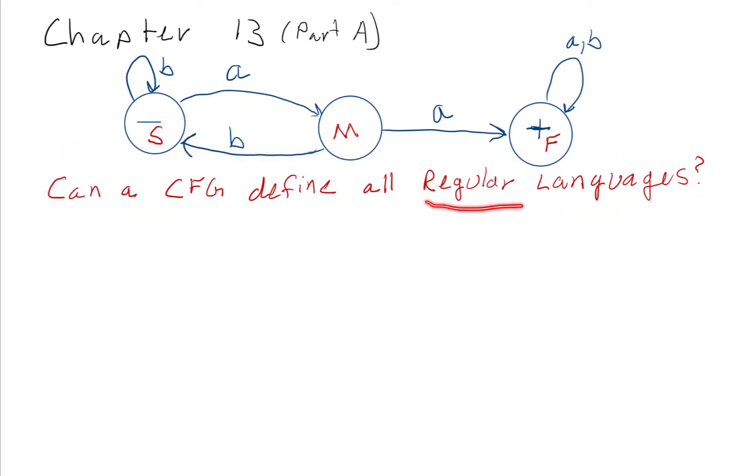Remember, a regular language is any language that can be defined with a finite automata, a transition graph, or a regular expression. With Kleene's theorem, if we could define it using one of those three things, we can define it with all the others.